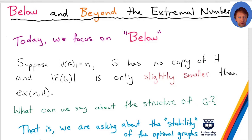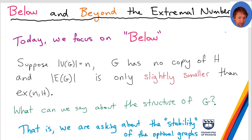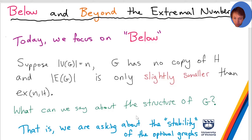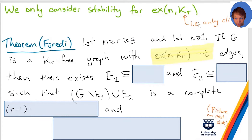This essentially boils down to a word that's a general term in mathematics beyond combinatorics: stability. We're asking about the stability of the optimal constructions for extremal numbers. Are they stable? If I reduce the number of edges, are all the constructions based on perturbing the extremal one, or can you do something completely different? Let me give you an actual proper theorem statement, and then maybe it'll be clear what I'm talking about.